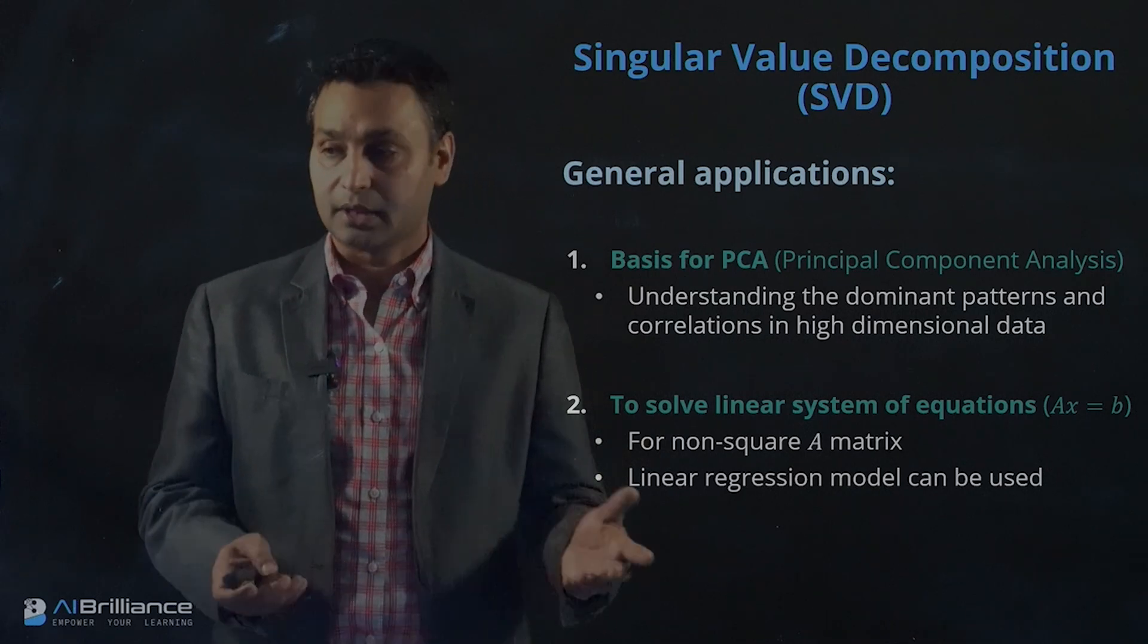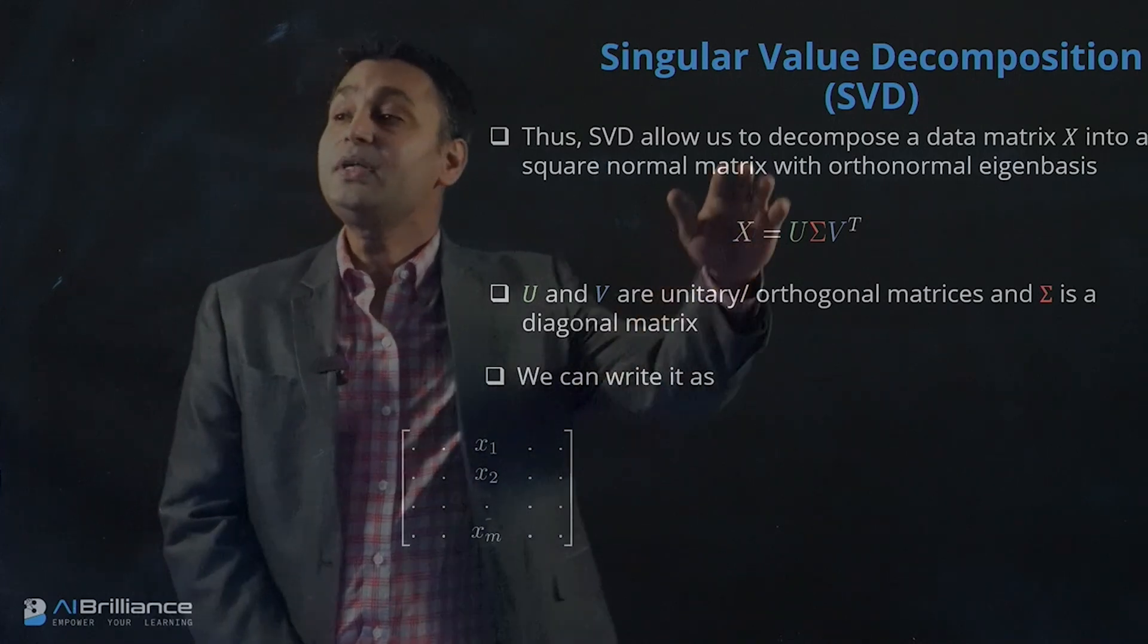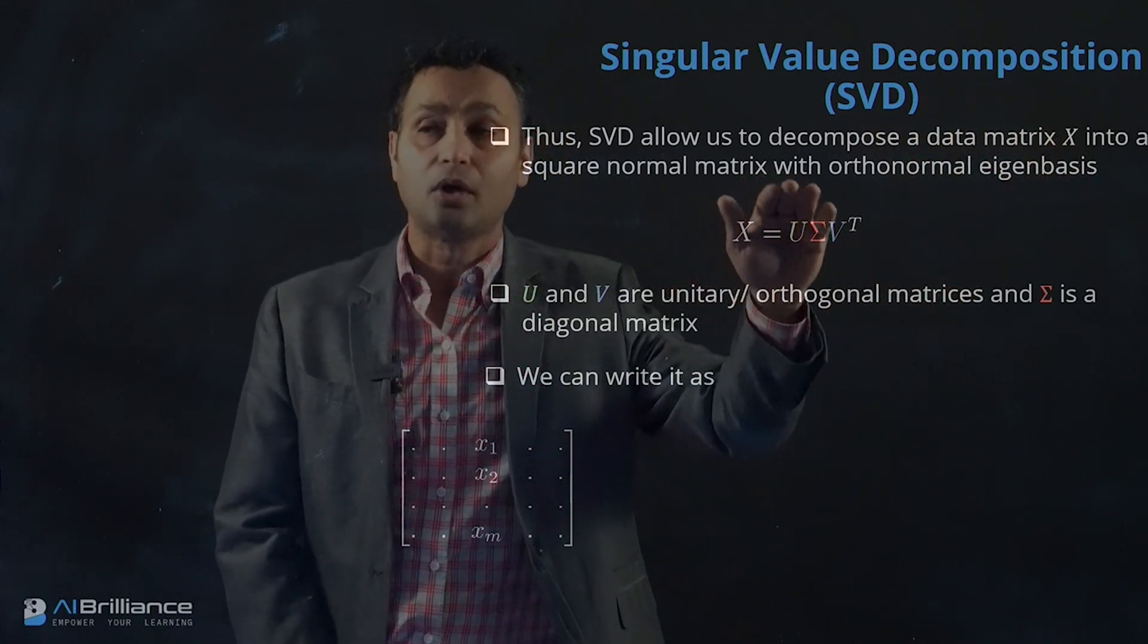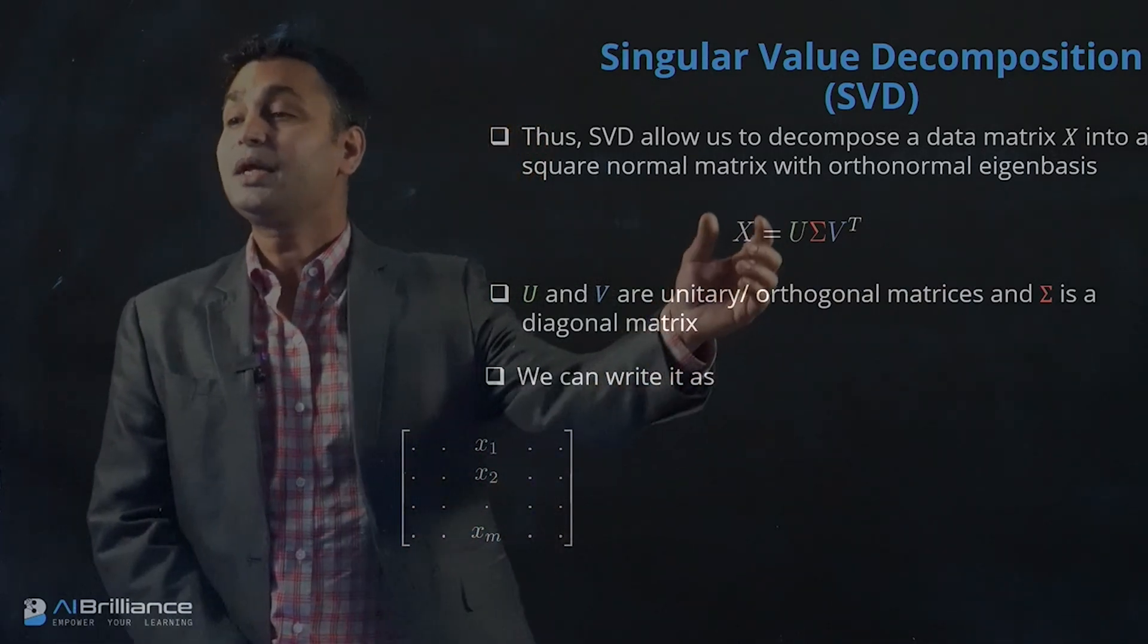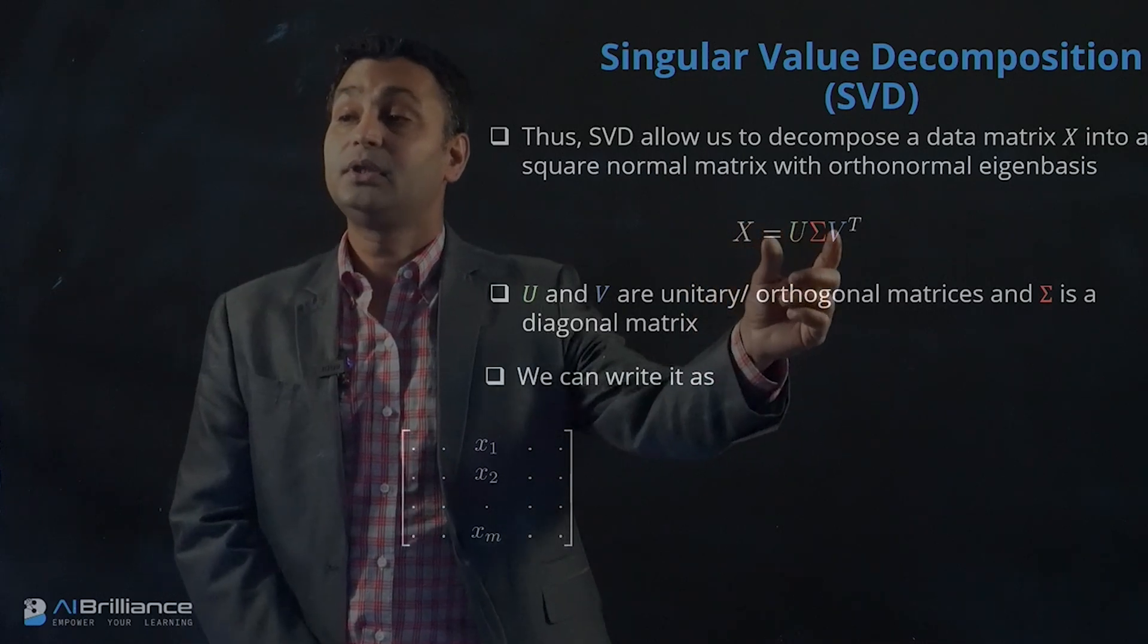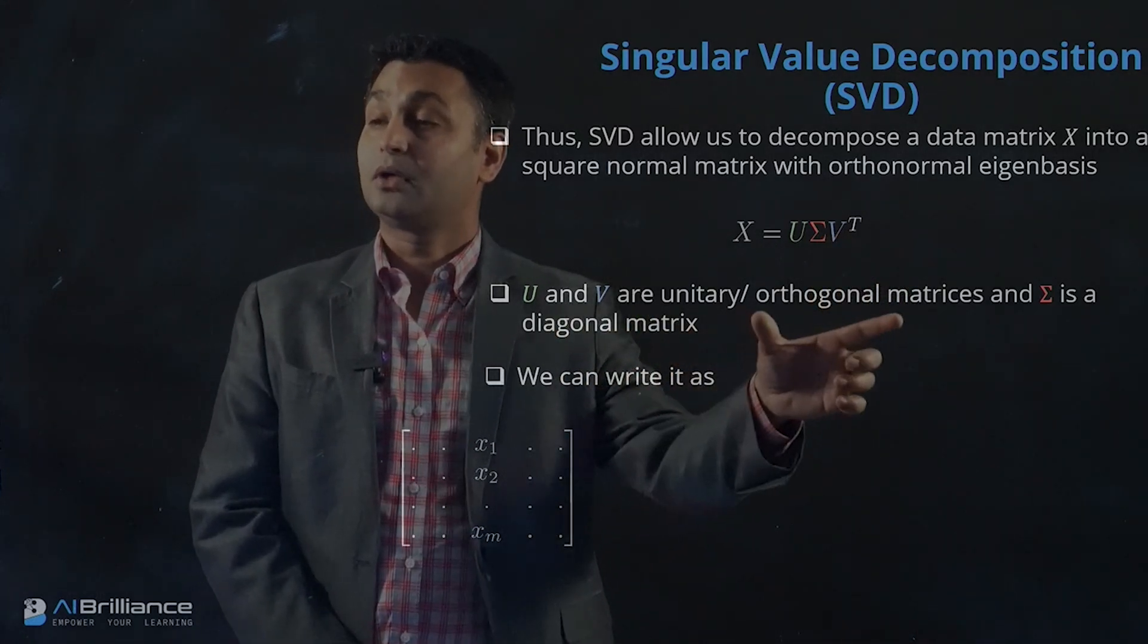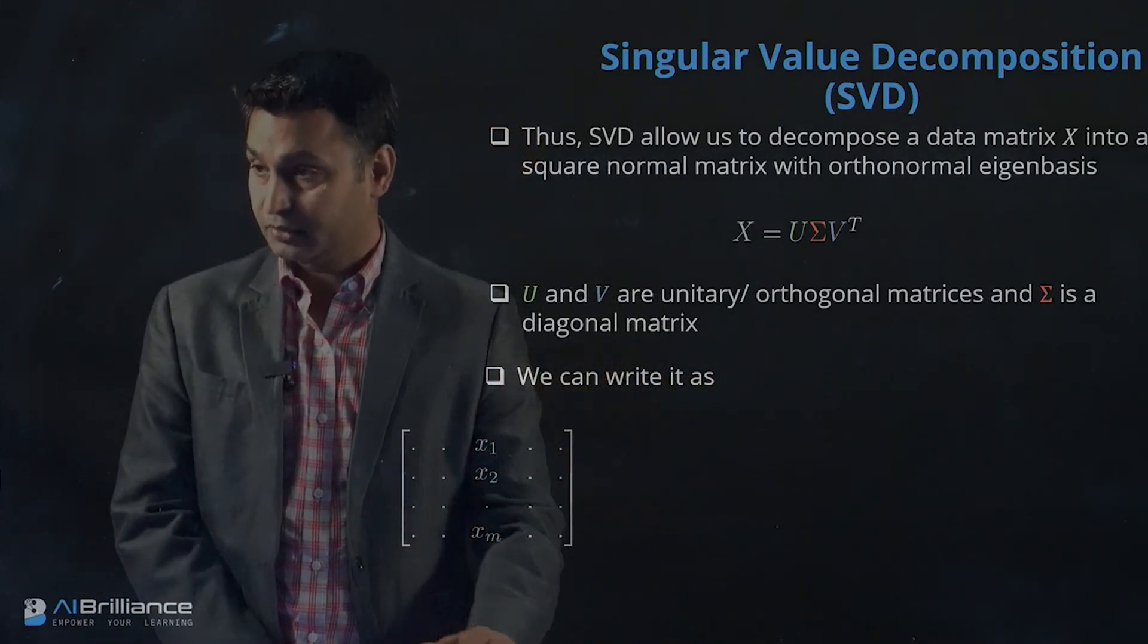What does SVD do? SVD allows you to decompose any data matrix such as X into a square normal matrix with orthonormal eigenbasis. You take a matrix X and write that matrix as a product of three different matrices: U, Σ, and V transpose, where U and V are orthogonal matrices and Σ is a diagonal matrix.